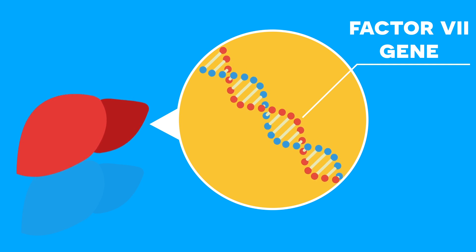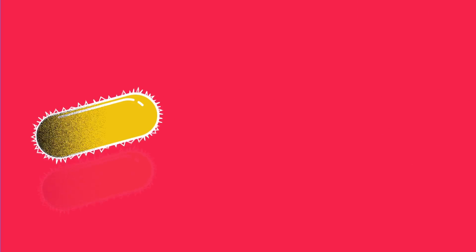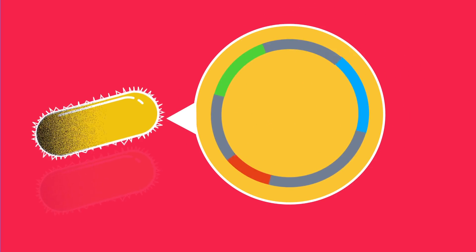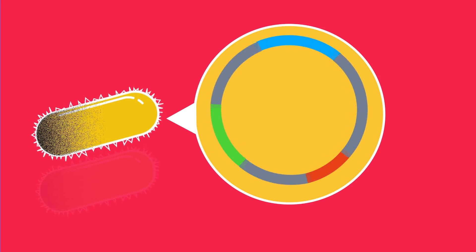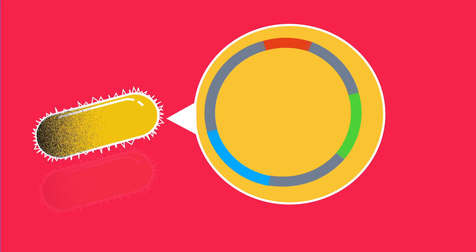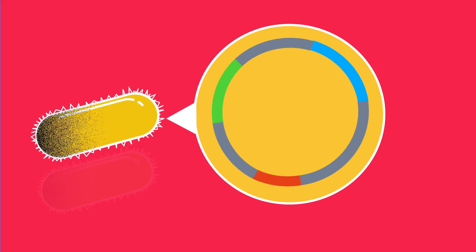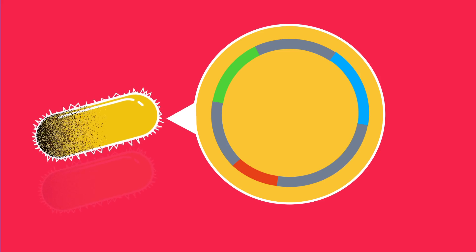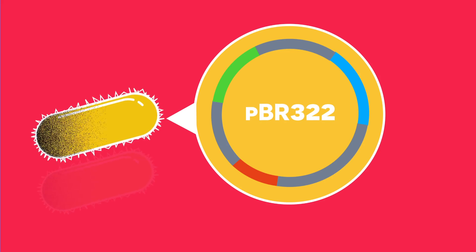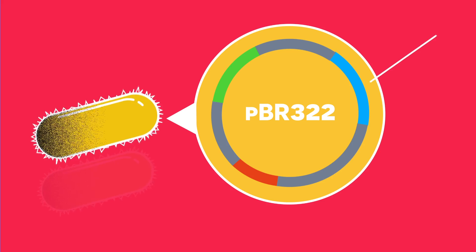This is done by taking the Factor 7 gene and having it replicate inside bacteria. We do this using a plasmid vector. A plasmid is a circular DNA molecule that exists outside the bacteria's main DNA. It can safely carry the clotting factor gene into the bacteria and have it replicate. The plasmid also contains genes that give the bacteria special advantages, and one of these advantages is antibiotic resistance. This plasmid in particular is a pBR322 plasmid. It has a tetracycline resistant gene and an ampicillin resistant gene.